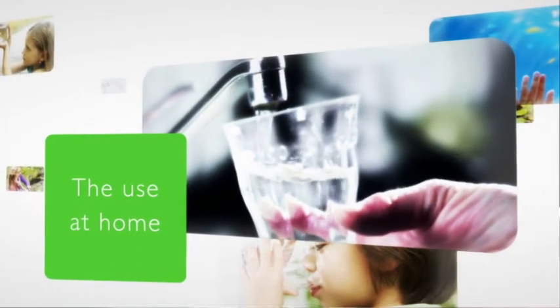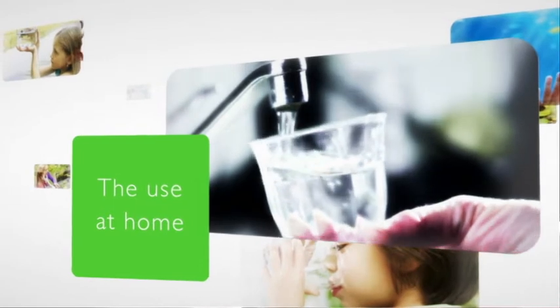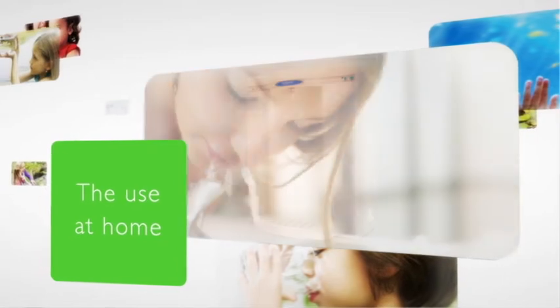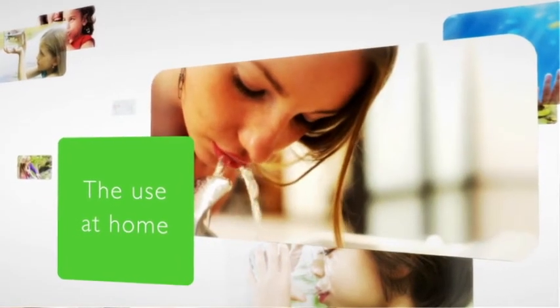In our homes, we can clean our drinking water by installing UV purification systems at the water entry point to the home, at the point of use such as the kitchen sink, or via separate purifiers on the countertop.